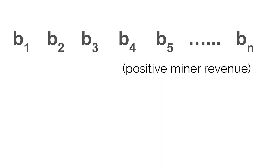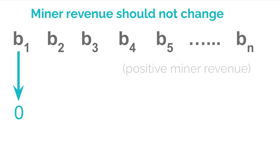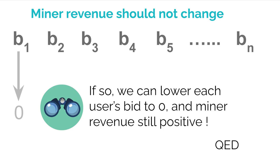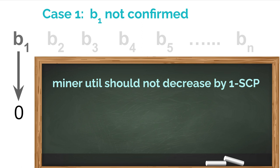We start from a bid configuration b1 to bn under which miner revenue is positive. The idea: lower each user's bid to zero one by one, and argue that miner revenue doesn't change. At the end, when everyone bids zero, the only possible miner revenue is zero since it can't exceed total payment. So I just need to show: when I lower user one's bid to zero, miner revenue doesn't change. There are two cases: when user one's bid is unconfirmed, and when it is confirmed.